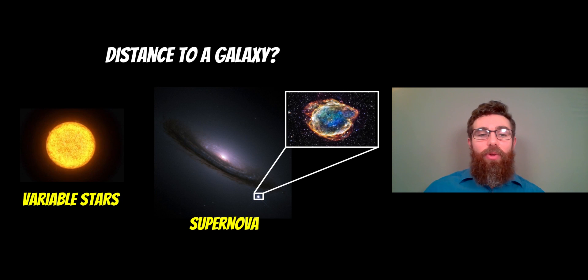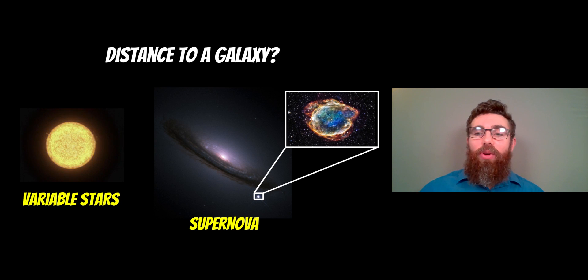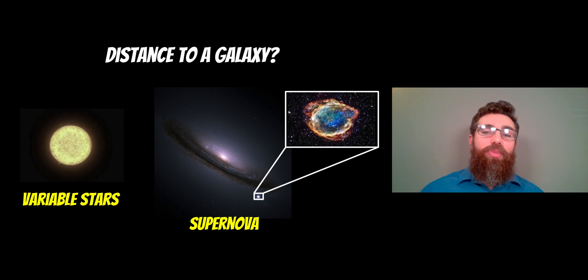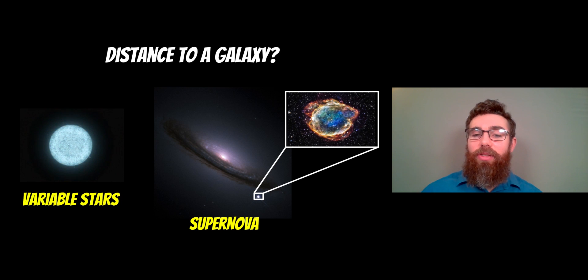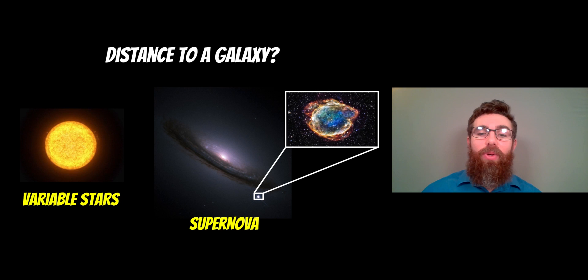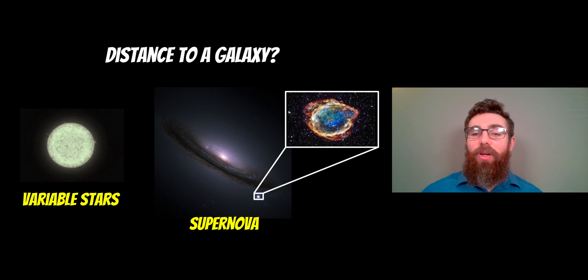The same thing is somewhat true for supernovae. Type 1a supernovae will typically always explode with the same energy. Therefore, they have the same absolute magnitude. We take a measurement of the apparent magnitude and we can work out a distance by the change between the two. This acts as a standard candle. We can get more distant galaxies from these supernova explosions because they can outshine our whole galaxy. They can be very bright events.